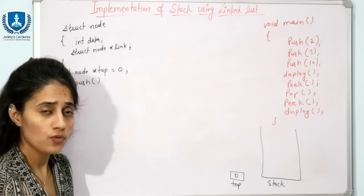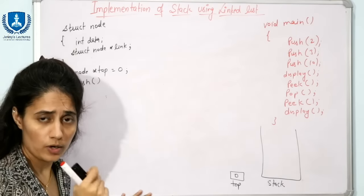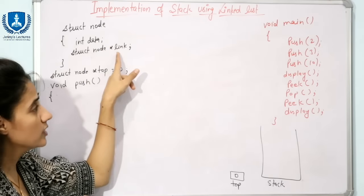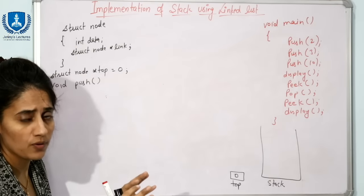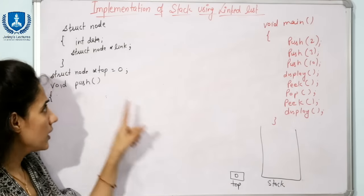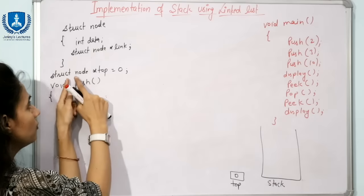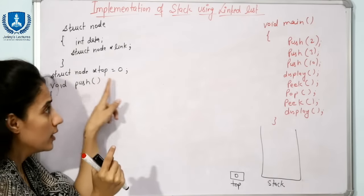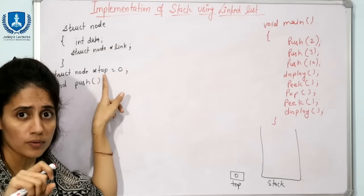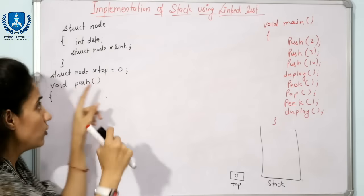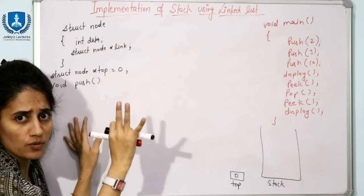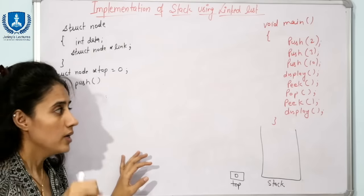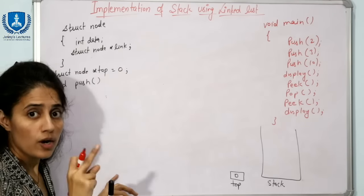In the code, we define struct node with two parts: a data part and a link or next pointer part. We also declare a top pointer of type struct node*, which stores the address of the topmost node. Initially, top is equal to null, meaning it is not pointing to any node. Since we are using linked list with dynamic memory allocation, we do not need to specify a fixed stack size.